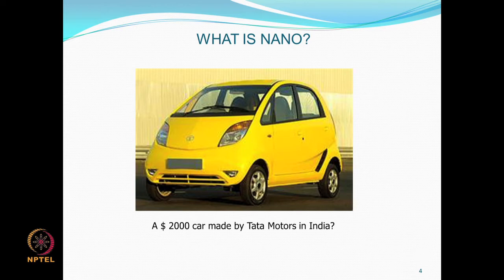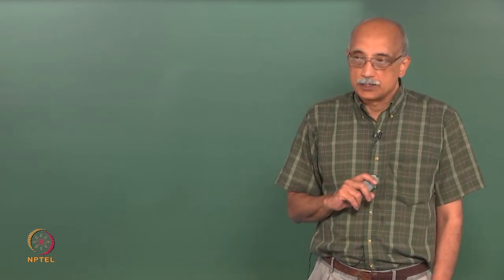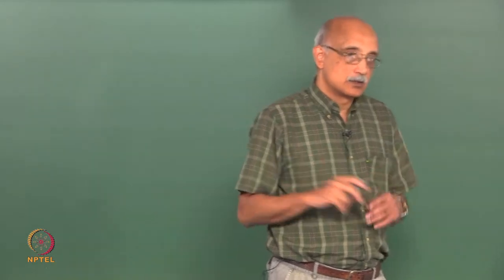So what is nano? The nano car is not what we are going to talk about. Nano in our context is a linear dimension. It comes from the Greek word for dwarf. It is about a billionth of a meter. This topic is also covered in the particle characterization web course — there are four lectures dealing with it and the PowerPoint is available in that NPTEL course on YouTube, so you do not have to take very extensive notes.